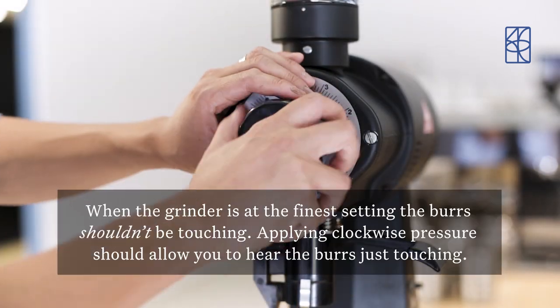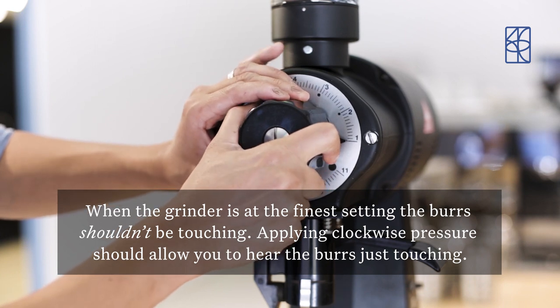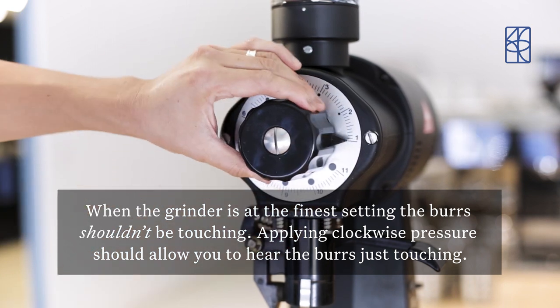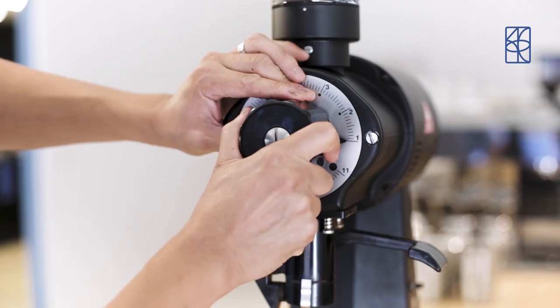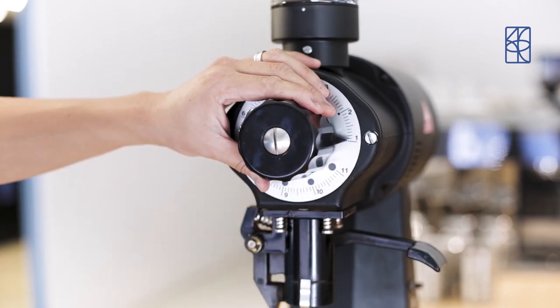When the grinder is at its finest setting, the burrs shouldn't be touching. Applying clockwise pressure should allow you to hear the burrs just touching. If necessary, repeat the calibration process and adjust.